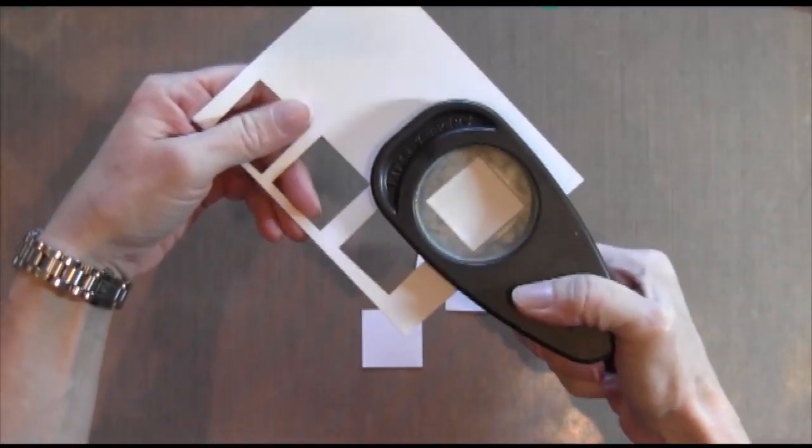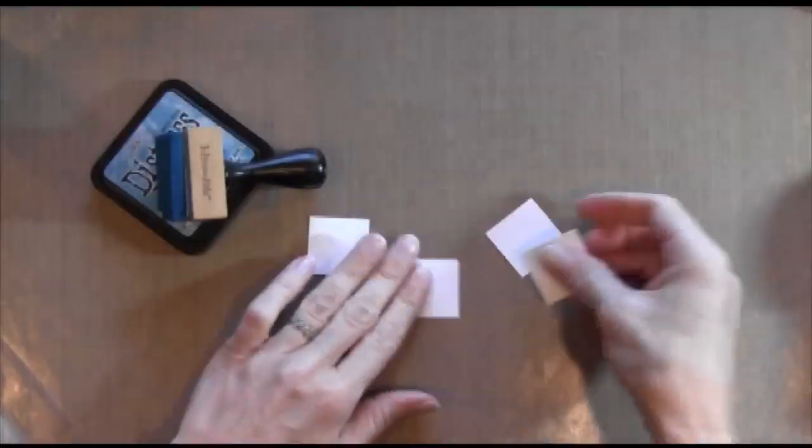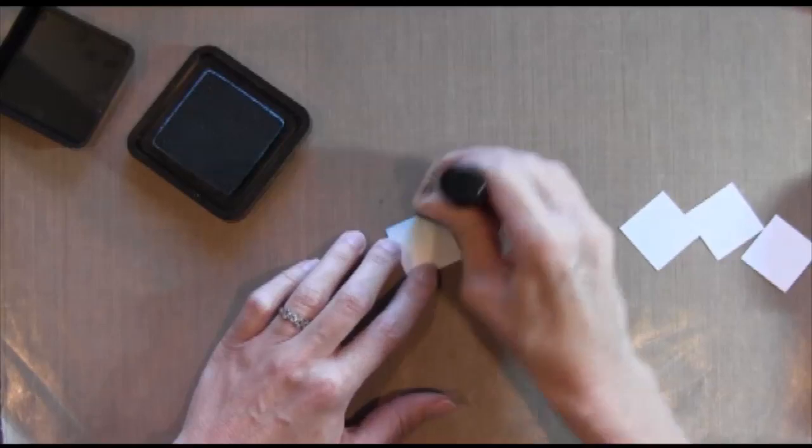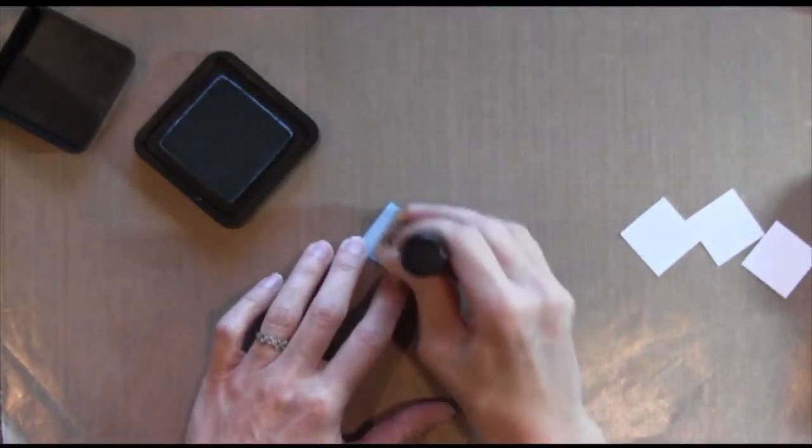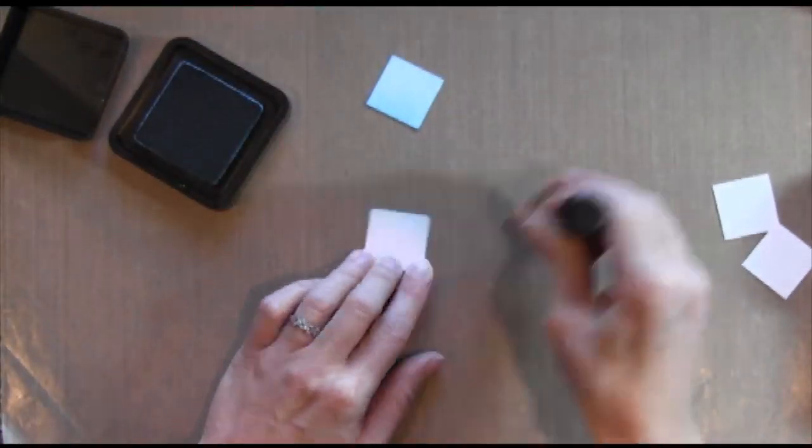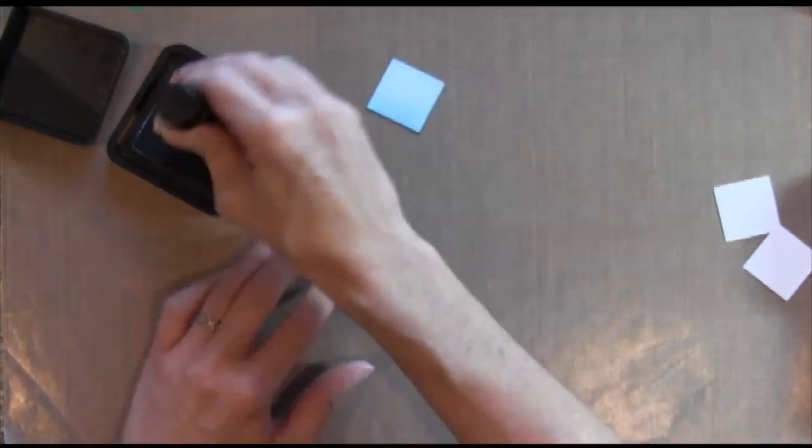I started by punching four squares using a one and a quarter inch punch, and then I took my ink applicator and some broken china ink and I just inked up three of the squares in blue and then one of the squares in spiced marmalade.